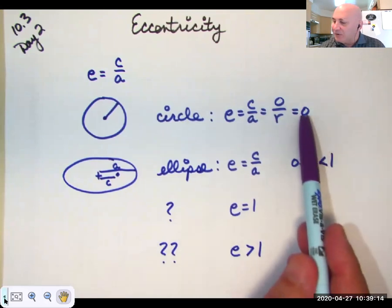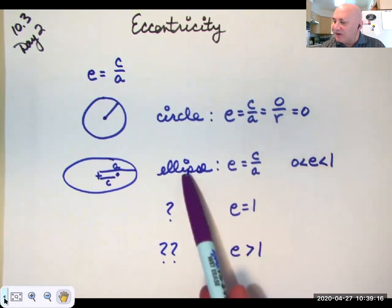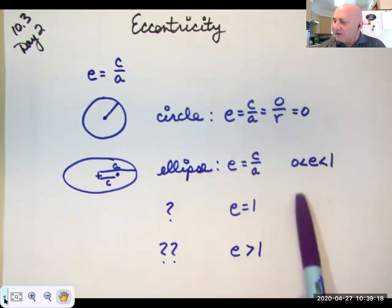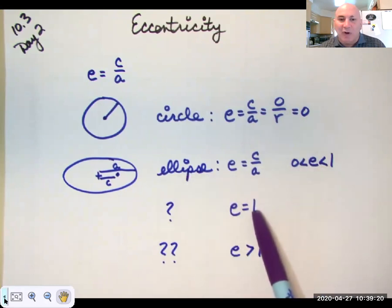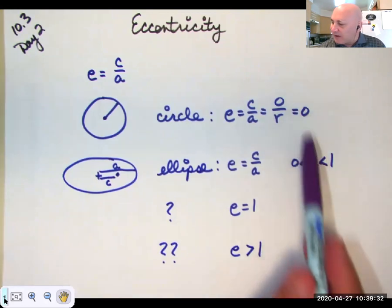So, we go from zero, we get a little bit bigger, you get an ellipse. You get a little bit bigger when e equals one, you get a parabola. I'll just tell you that. And when e is greater than one, you get a hyperbola. So, these are your four conditions for eccentricity.